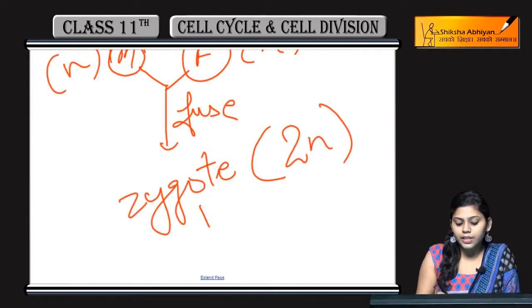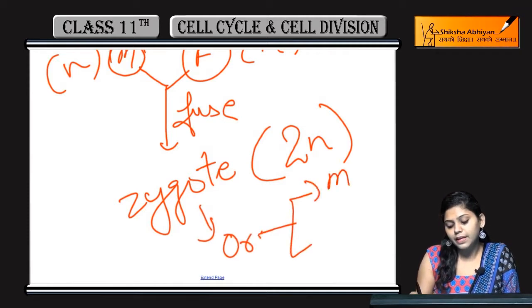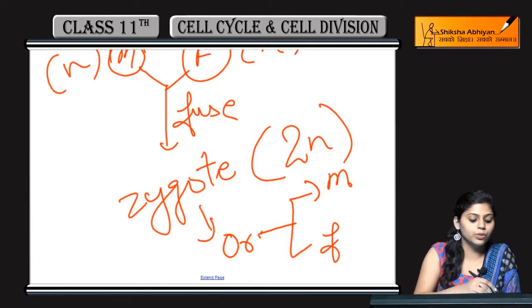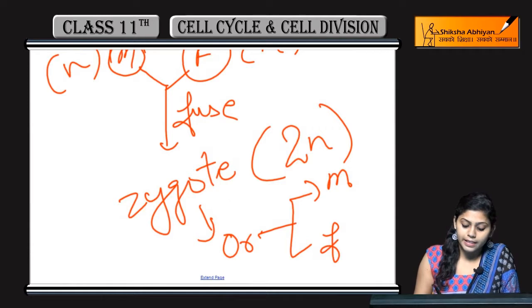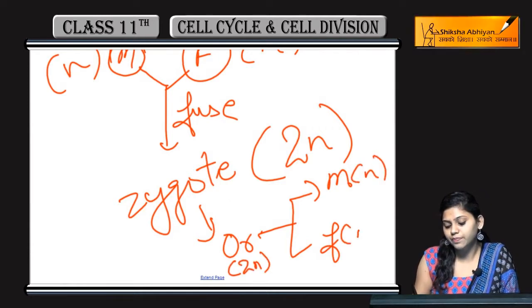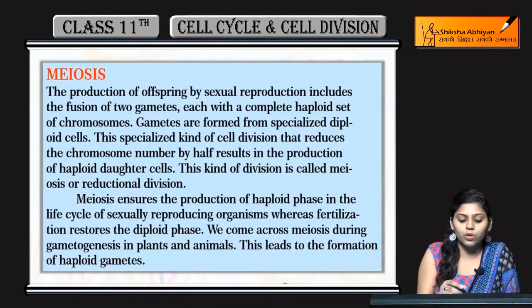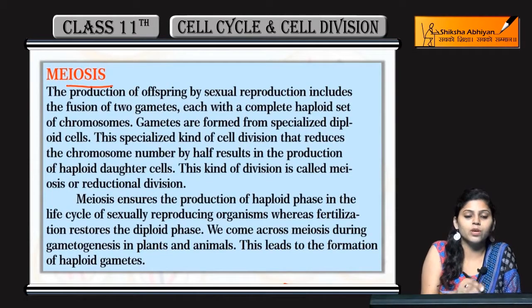The zygote develops into an individual organism, which is diploid. If it is male, it will produce male gametes; if it is female, it will produce female gametes. The organism is 2N (diploid), but the gametes will be haploid. This reduction is because of meiosis.